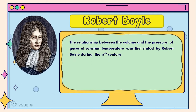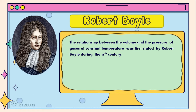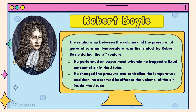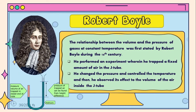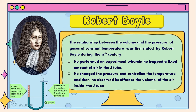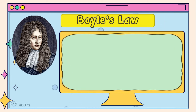The relationship between the volume and the pressure of gases at constant temperature was first stated by Robert Boyle during the 16th century. He performed an experiment wherein he trapped a fixed amount of air in the J-tube. He changed the pressure and controlled the temperature, and then he observed its effect on the volume of the air inside the J-tube.